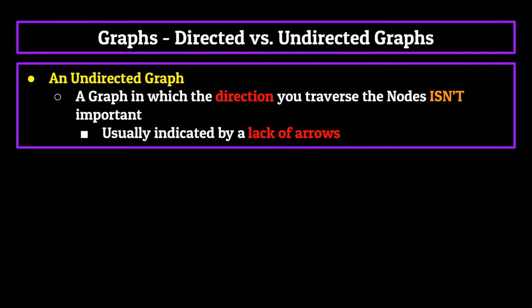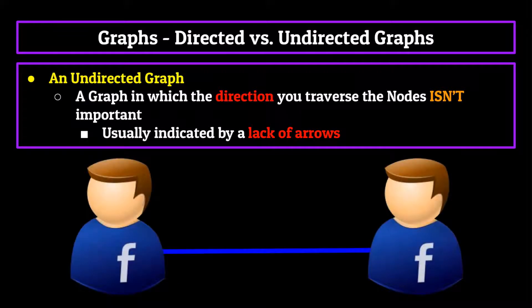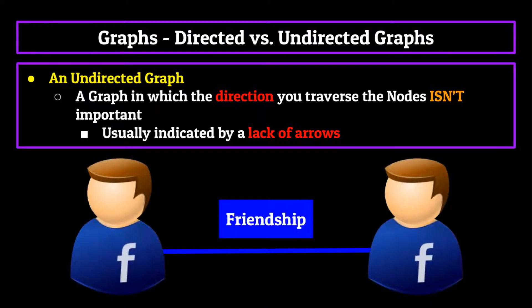A good way to visualize undirected graphs is like a network of friends on Facebook, where each edge indicates a friendship. Because of the fact that when somebody accepts to be your friend on Facebook, you are both added to each other's friends list, the friendship goes both ways and direction is unimportant, as you are both friends of one another.